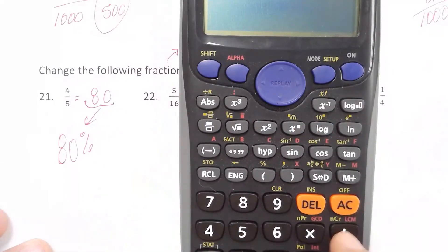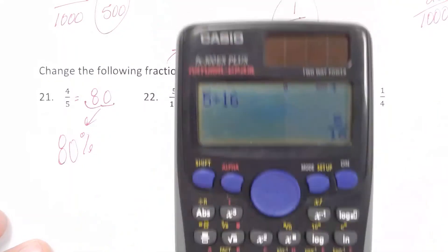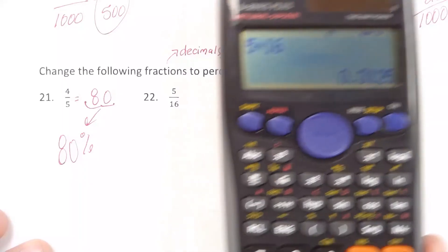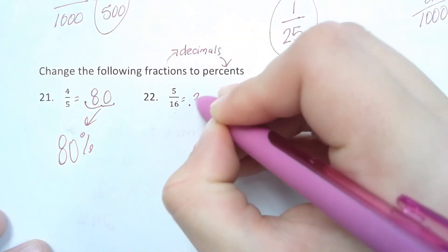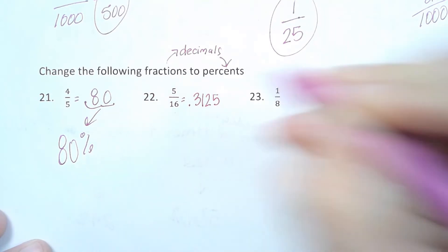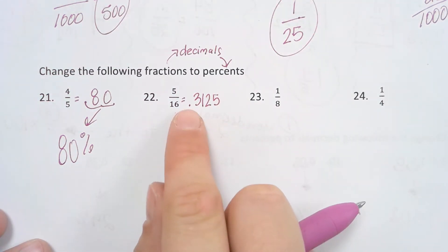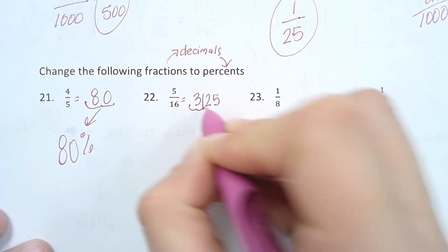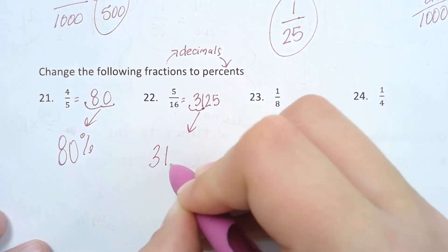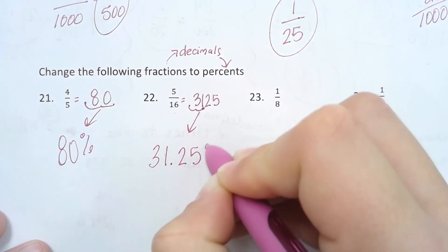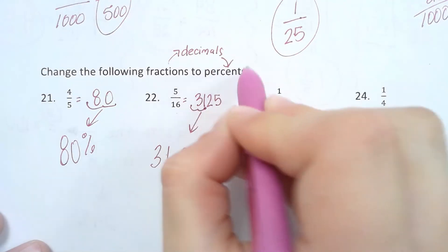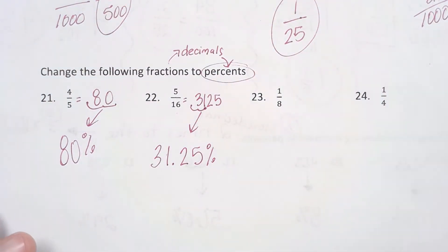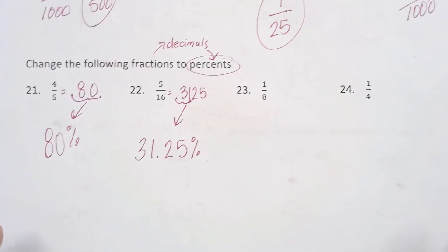So for 5 over 16 — first I'm going to change it to a decimal by dividing 5 divided by 16, so I get 0.3125. Then I'm going to change this decimal to a percent by moving my decimal point two times to the right, or using my calculator and multiplying it times 100. Either way, we are going to end up with 31.25%. And notice — since we are changing to percents, I am writing my percent sign after every single number. You need to make sure that you're writing your percent signs as well.